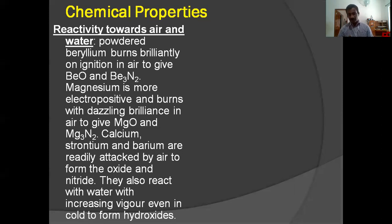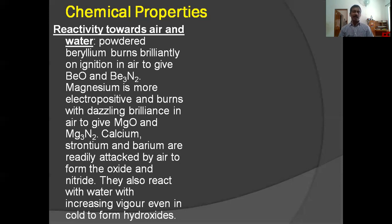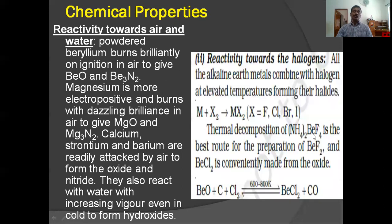When they react with air they form oxide and also nitride. But in the case of alkaline metals, they can form only oxides, except lithium which can form nitride. But all other alkaline metals form only oxides, whereas alkaline earth metals can form both oxides and nitrides. They also react with water with increasing vigor, even in cold, to form hydroxides, just like alkaline metals.